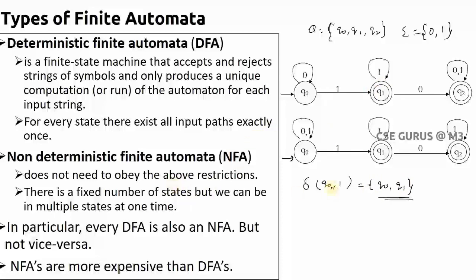In NFA, there are no such strict rules. Also, q2 on 0 may have no path at all. So in NFA you may have a path, you may not have a path, or you may have more than one path for the same input. This arrangement is what we call Non-Deterministic, whereas in DFA you have the constraint that for every state all input paths must exist exactly once.